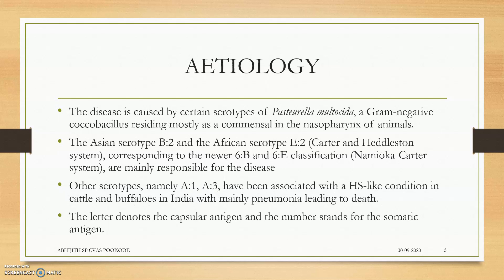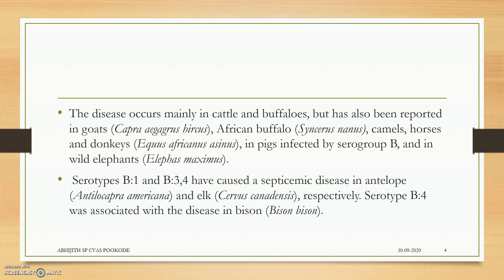Moving to the etiological agent — for more details you can see my video on the bacteria Pasteurella; I will give the link in the description box. The disease is caused by certain serotypes of Pasteurella multocida. These commonly colonize the nasopharynx and also the reproductive tract of the animal. The Asian serotype B2 mainly causes disease in Asian areas, and the African serotype E2 in African areas. The disease occurs mainly in cattle and buffaloes but has also been reported in goats, African buffalo, donkeys, and wild elephants.